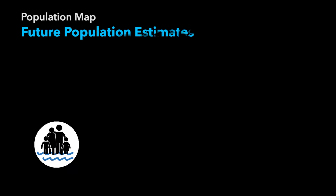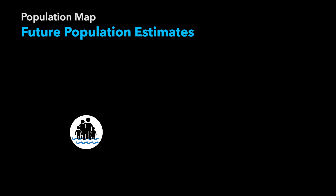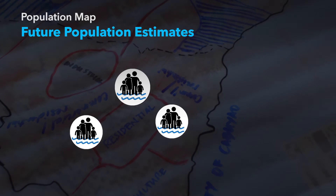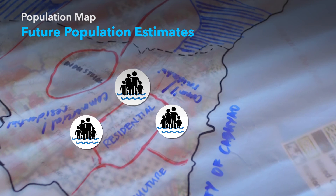Additionally, since future population estimates are also available at the district level, this data could be incorporated with the future land use map from our participatory mapping exercise in step one, and we could generate future population maps as well to assess the future flood risk.